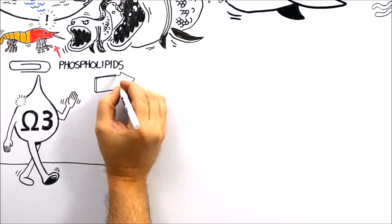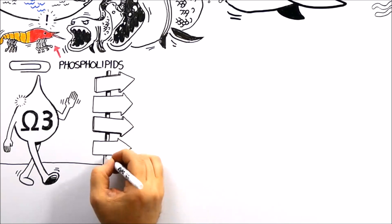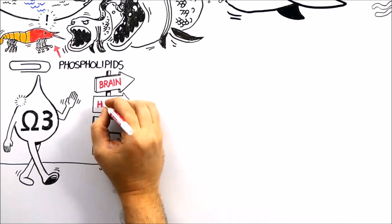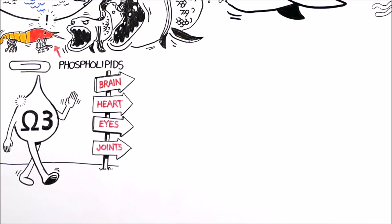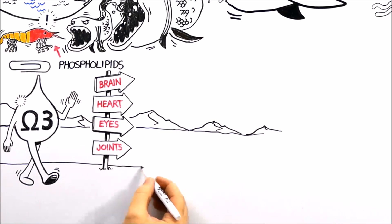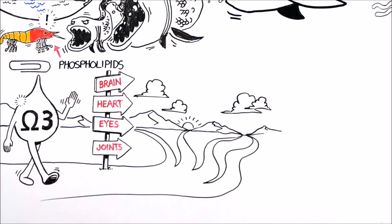Omega-3s are great if they are delivered to the places the body needs the most, such as the brain, heart, eyes, and joints. But they can't get to your tissues and organs if they don't get into your blood first.